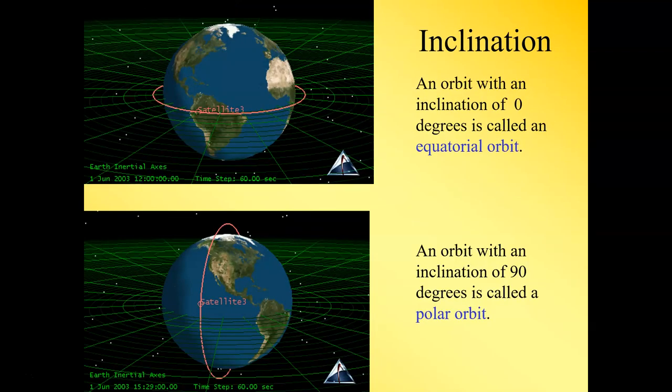Let's take a look at some special cases and special terms. An inclination of zero is called an equatorial orbit. You can see that on the top. And 90 degrees is called a polar orbit.